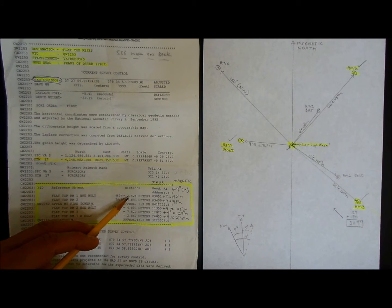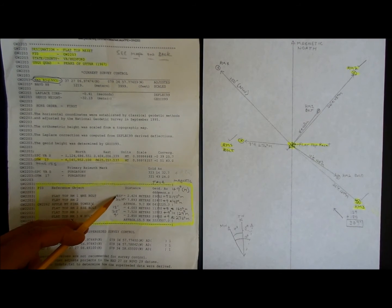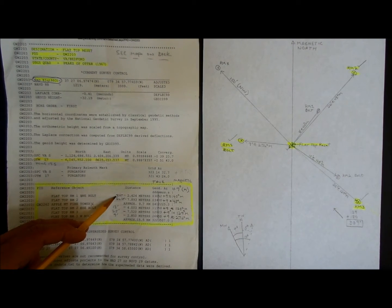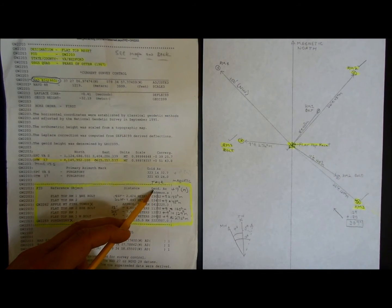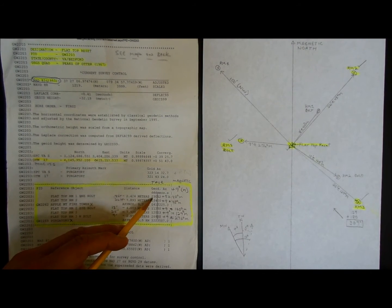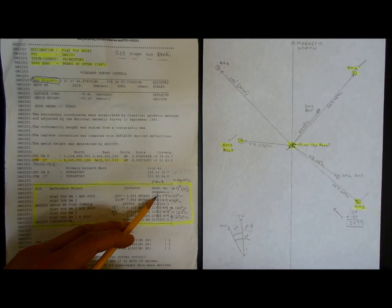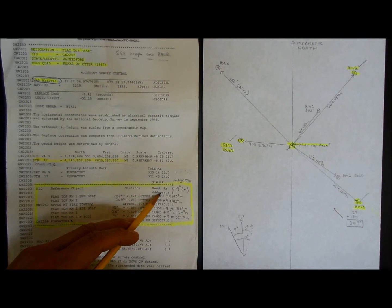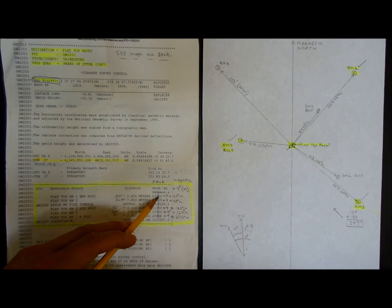They give the distances in meters, but I always convert them to feet because I think in terms of feet. So this one's 8 feet away from Flattop Reset, and the true azimuth is 030. So that's 30 degrees, and then the 52 is minutes. Let's just call that 31 degrees.